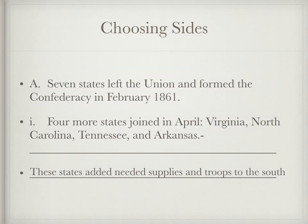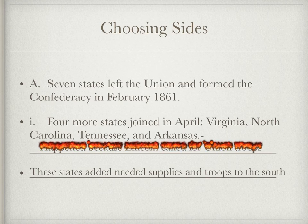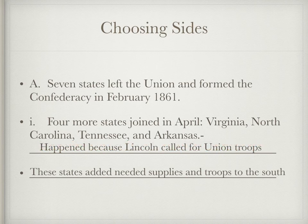Just to review: by February 1861, seven states left the Union and formed the Confederacy, and four more states joined in April — Virginia, North Carolina, Tennessee, and Arkansas. The reason they did this is because Lincoln called for Union troops after Fort Sumter. If you're thinking 75,000, you're right.